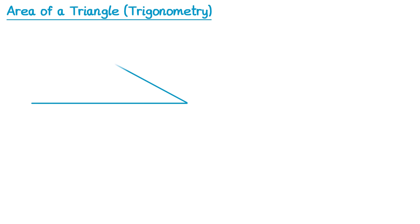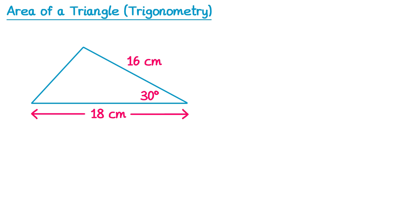Now let's have a look at a trickier triangle. For this one we've been given some information but not the perpendicular height. We have the base at 18cm and the sloped height at 16cm, but the perpendicular height is missing. It is still possible to find the area of the triangle using this information.